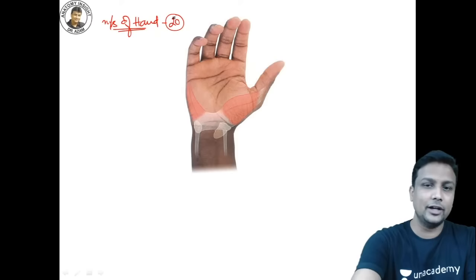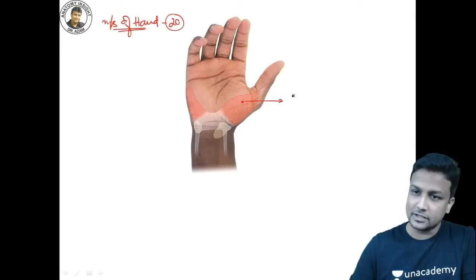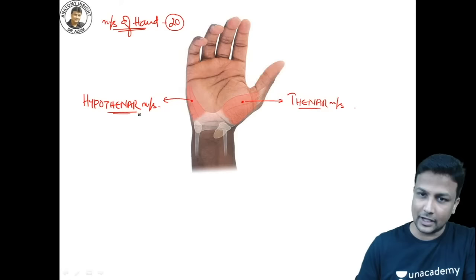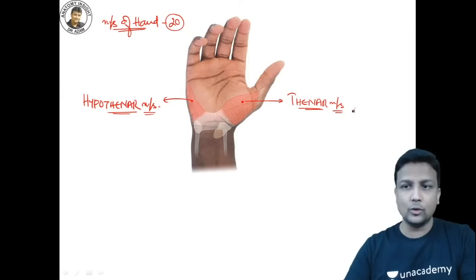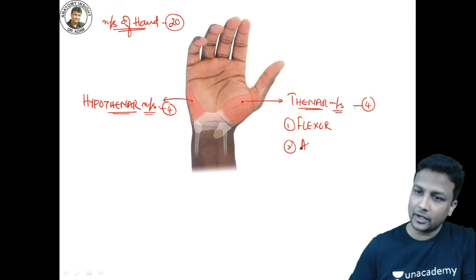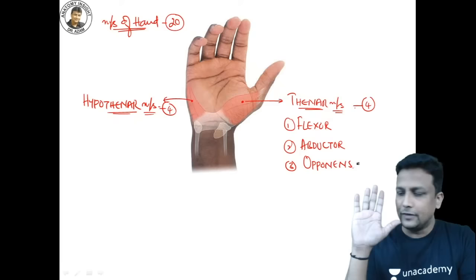Out of those 20 muscles, the group of muscles below the thumb are the thenar muscles, and the group below the little finger are the hypothenar muscles. There are four thenar muscles and four hypothenar muscles. In the thenar group: a flexor muscle to flex the thumb, an abductor to abduct the thumb, and an opponens to oppose the thumb.